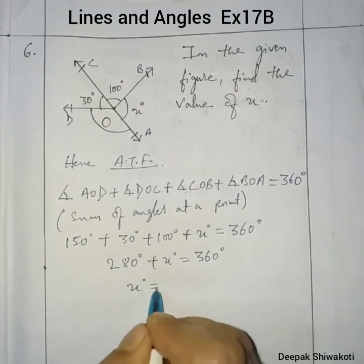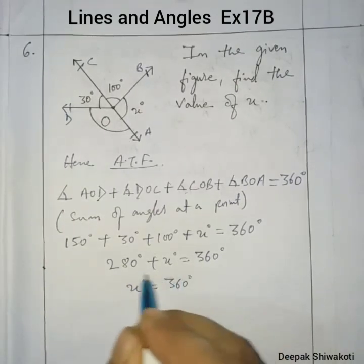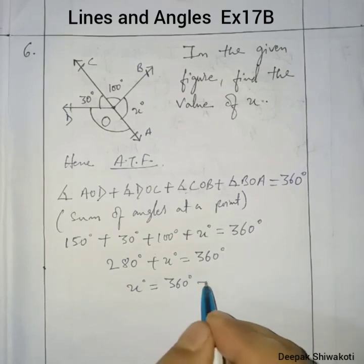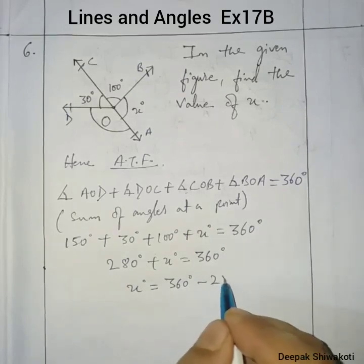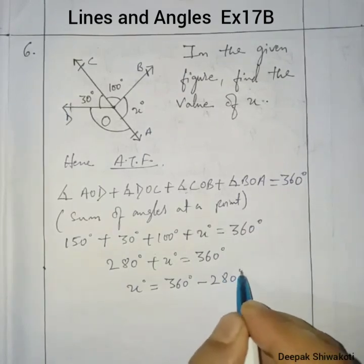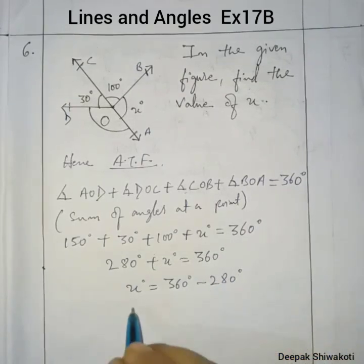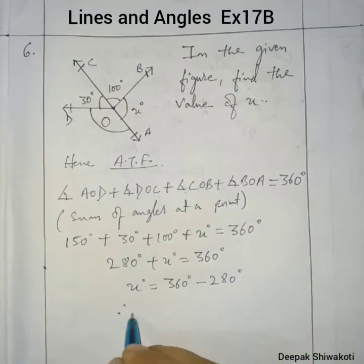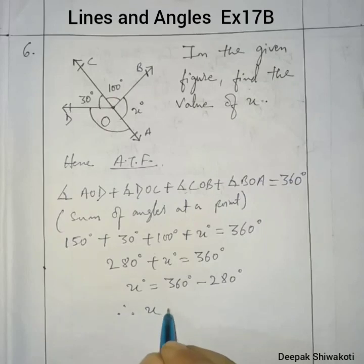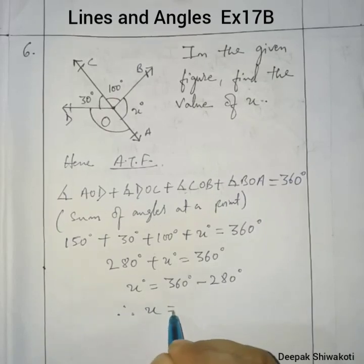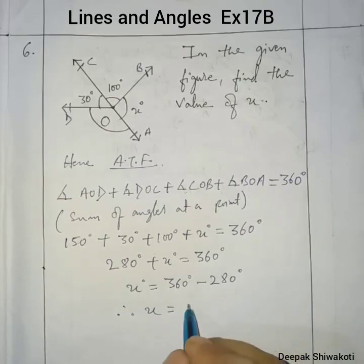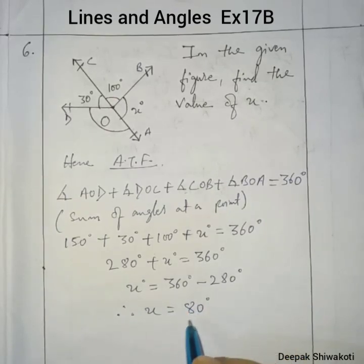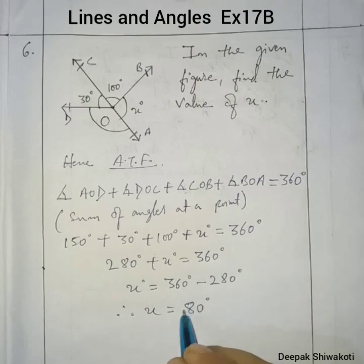So x equals 360 degrees minus 280 degrees, which gives us x equals 80 degrees. We have found the value of x.